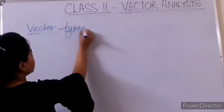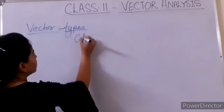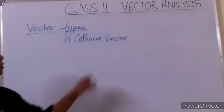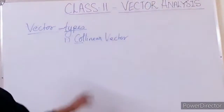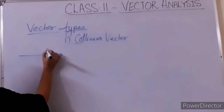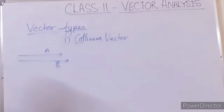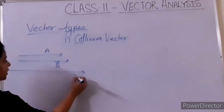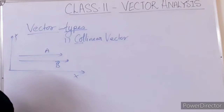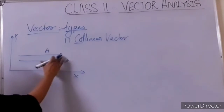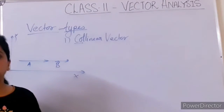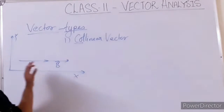The first type is collinear vector. The name itself indicates what these are — 'co' means together, 'linear' means in one direction. If you take vector A and vector B and they are aligned with each other, in a single line, they are said to be collinear vectors. They are moving in the same line. There may be so many vectors in a single line — A, B, C, G and so on.